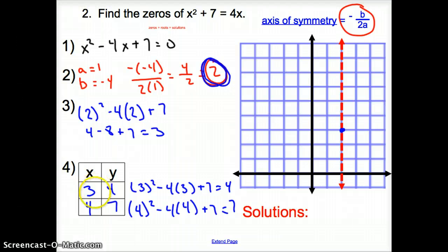And then I plug in 4 squared minus 4 times 4 plus 7 equals 7. So it's coordinate point 4, 7. Now from your origin, you're going to graph 3, 4. So I go over 3, up 4, put a point.